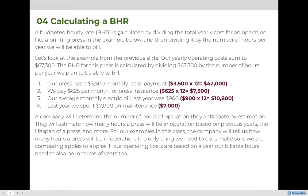So let's use this information to calculate a BHR. A budgeted hourly rate is calculated by dividing the total yearly cost for an operation — like the printing press we just established — by the number of hours per year we will be able to bill or charge for its operation. Our yearly operating costs summed to $67,300, and the BHR for this press is calculated by dividing $67,300 by the number of hours per year we plan to bill for that service.